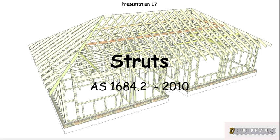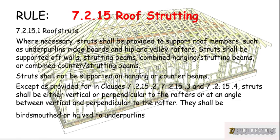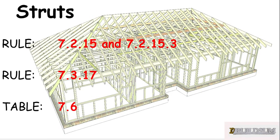There are two to three rules to look at for struts: 7.2.15 and 7.2.15.3, which looks at fan struts in particular, and 7.3.17. It's another miscellaneous member, so it goes into table 7.6 for the actual size.